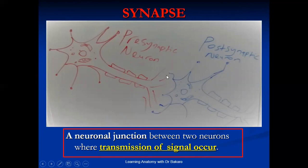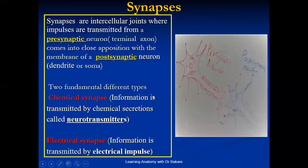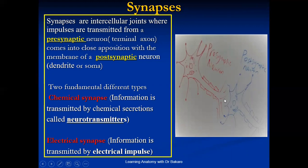The point at which neurons form contact with each other is called the synapse. Synapses are intercellular joints where impulses are transmitted. For a synapse to occur, there must be two types of neurons: a presynaptic neuron and a postsynaptic neuron. The presynaptic neuron is the one bringing the impulse to the point of synapse — it is the giver of the neural impulse — while the postsynaptic neuron is the one that receives the impulse. The point at which they form contact, through which these impulses are transmitted, is called the point of synapse.